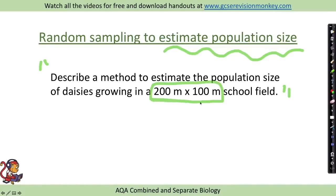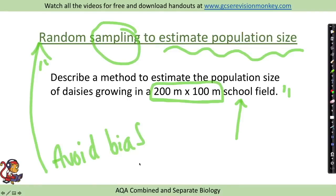For example, you might get a question that says describe a method to estimate the population size of daisies growing in a 200 meter by 100 meter school field. We can't count every single daisy, it would just take too long, so we need to have a method of sampling that is completely random to avoid bias.